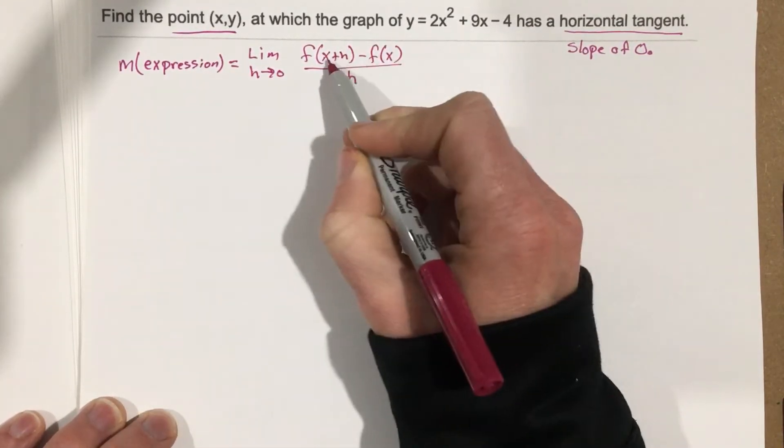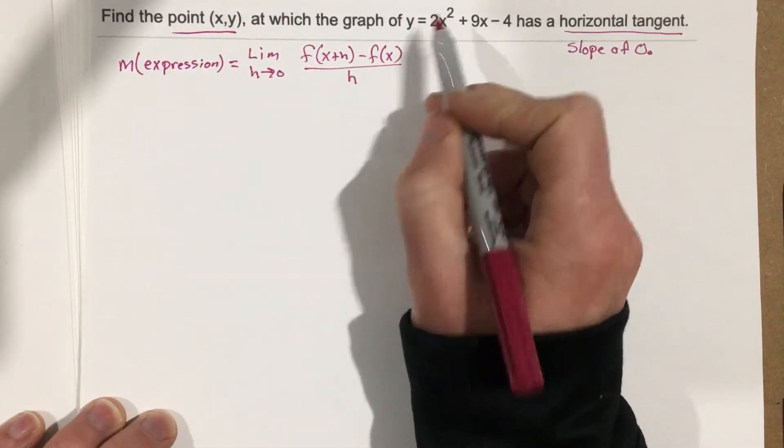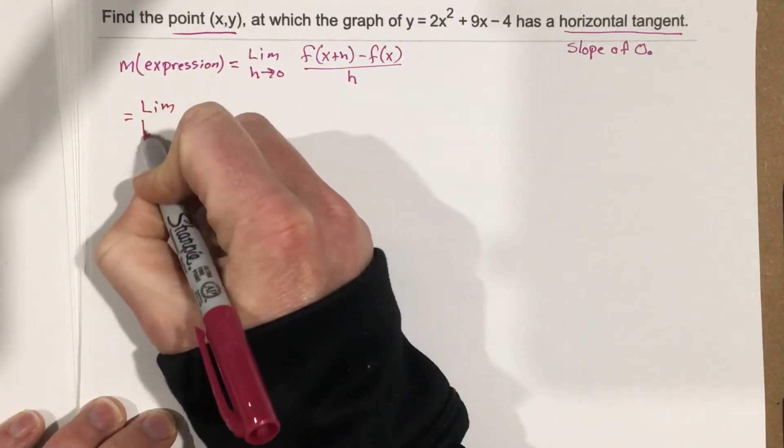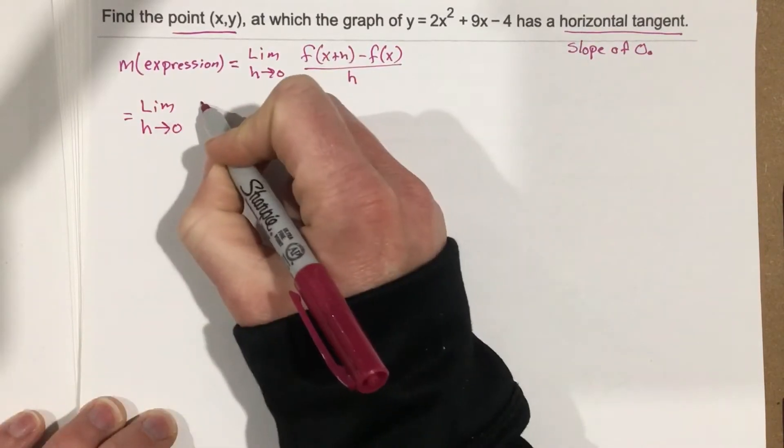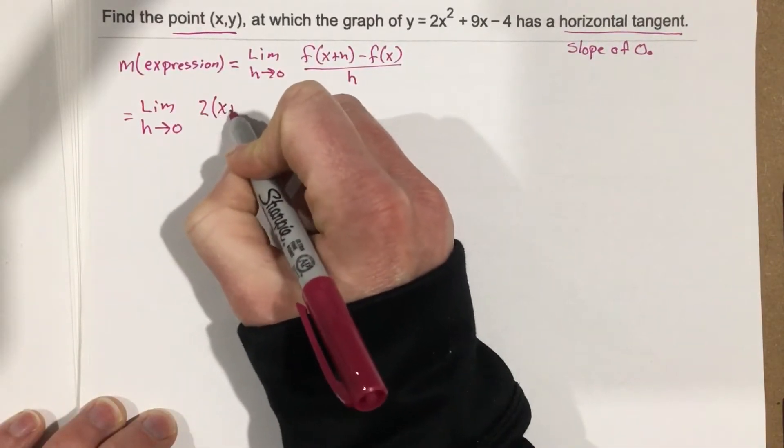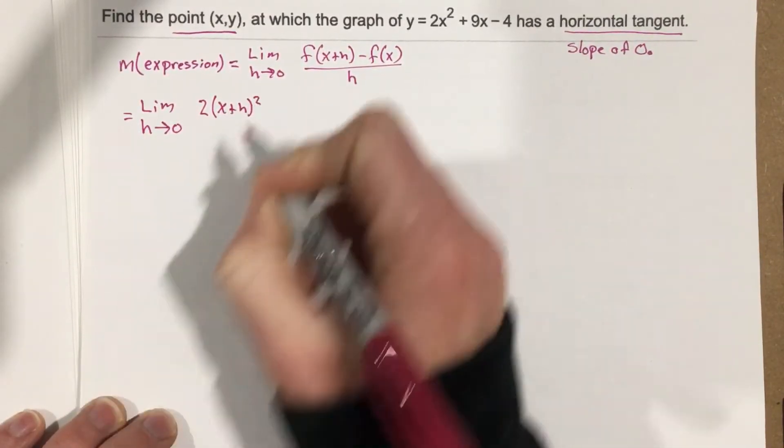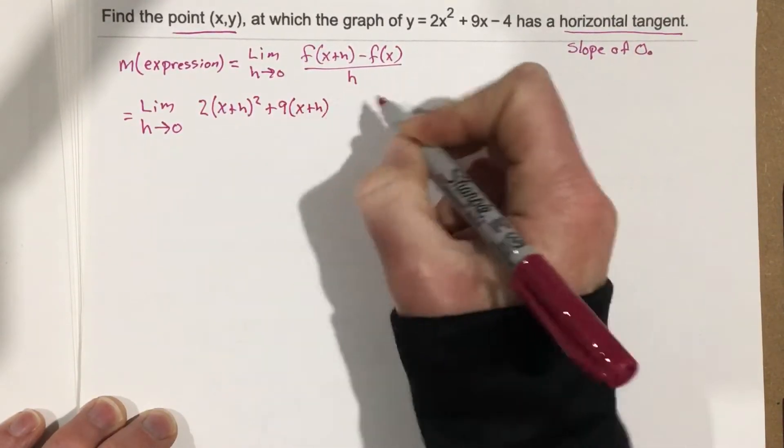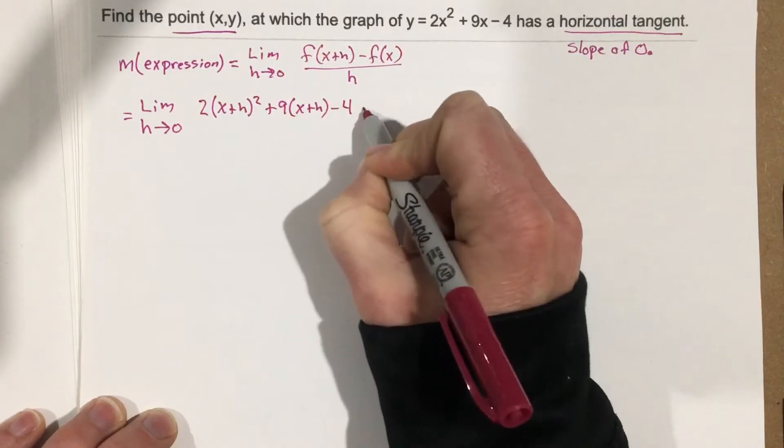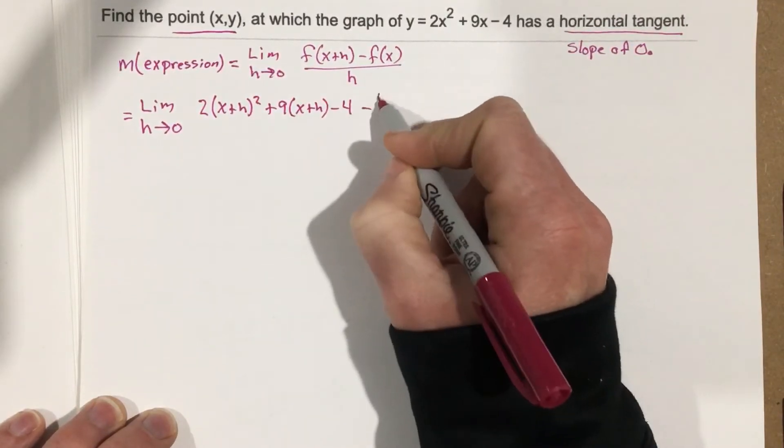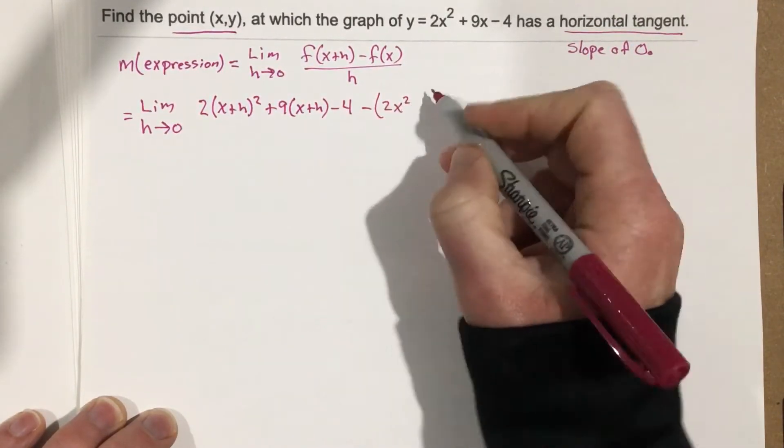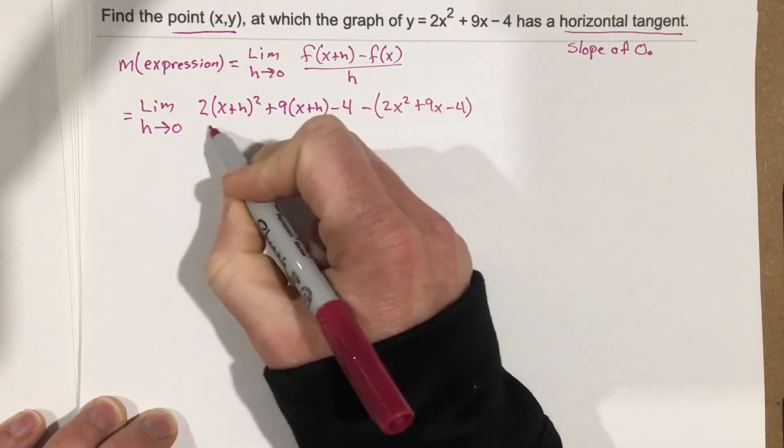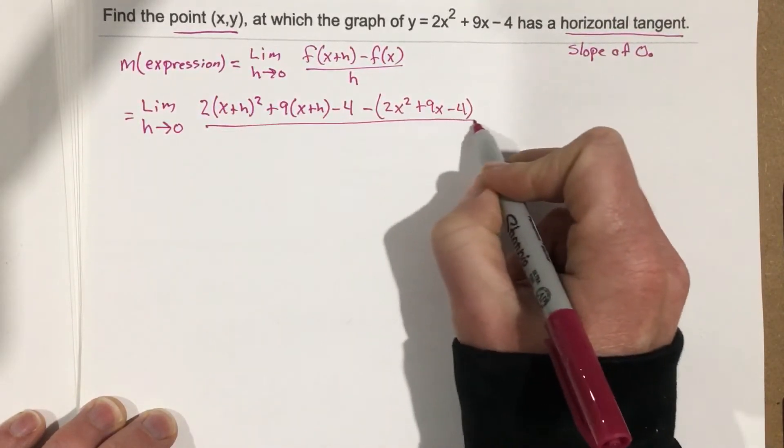We're going to take x plus h and plug it in here, and we end up with limit as h approaches 0, 2(x + h)² + 9(x + h) - 4, minus the original function, which is just 2x² + 9x - 4. And that's all over h.